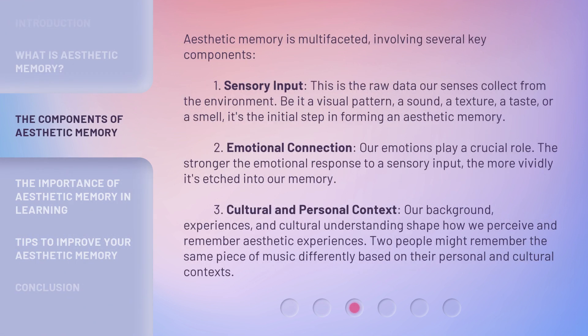Aesthetic memory is multifaceted, involving several key components. One: sensory input — this is the raw data our senses collect from the environment, be it a visual pattern, a sound, a texture, a taste, or a smell. It's the initial step in forming an aesthetic memory. Two: emotional connection — our emotions play a crucial role. The stronger the emotional response to a sensory input, the more vividly it's etched into our memory. Three: cultural and personal context — our background, experiences, and cultural understanding shape how we perceive and remember aesthetic experiences. Two people might remember the same piece of music differently based on their personal and cultural contexts.